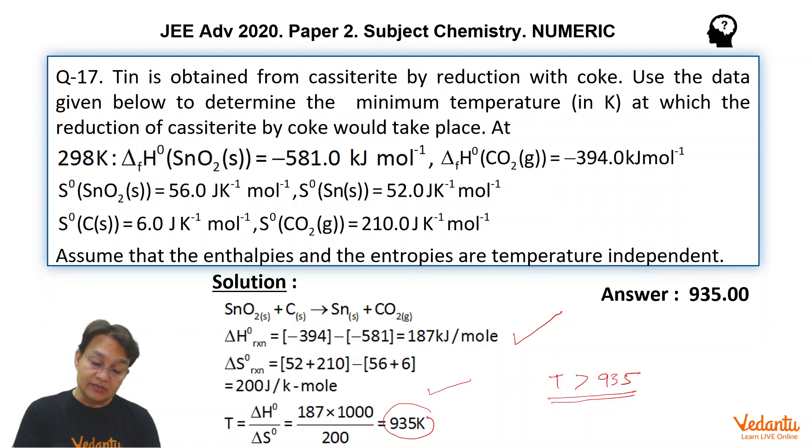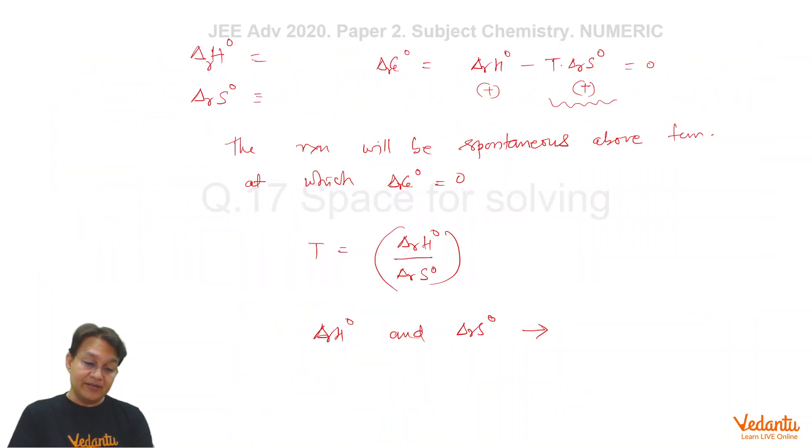So your answer is 935. I hope that you understand all the assumptions taken to solve this problem and how to solve the problem, what is the fundamental or the basic thought behind this problem. These types of problems are quite common nowadays in JEE Advanced and at least one or two questions from thermodynamics you will always see in the Advanced paper. Thanks for watching. For more detailed solutions of other questions, stay tuned. Thank you.